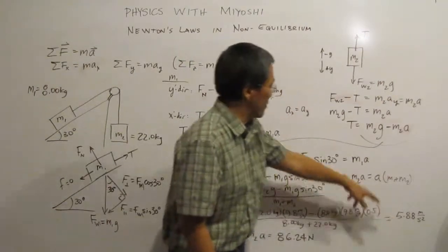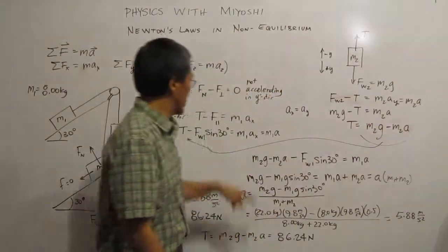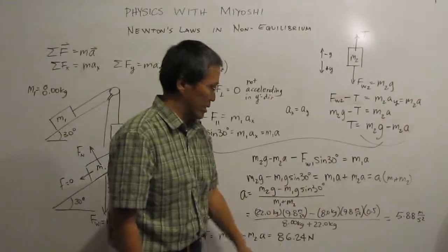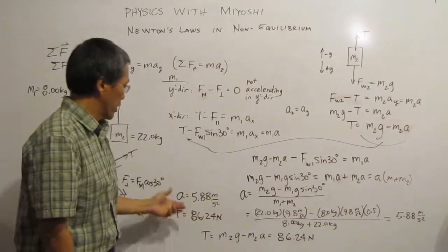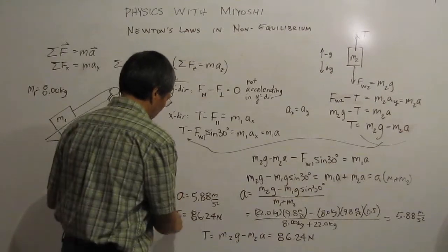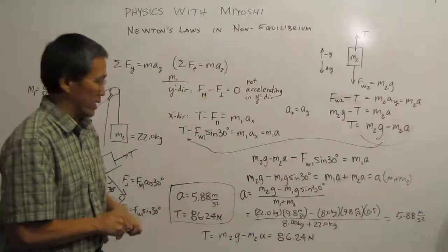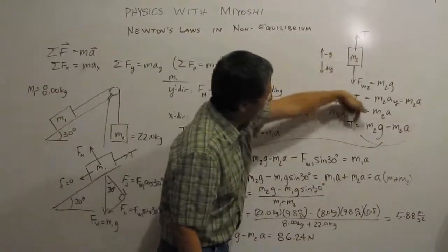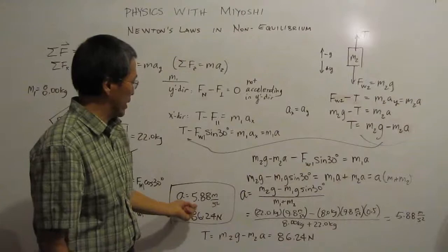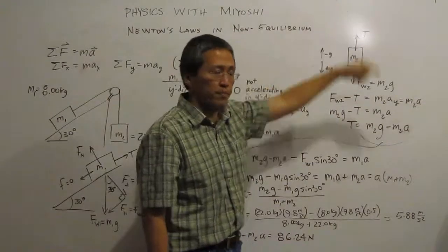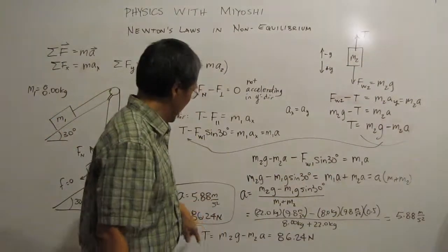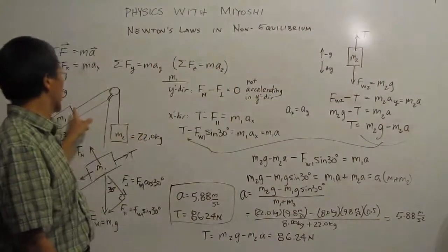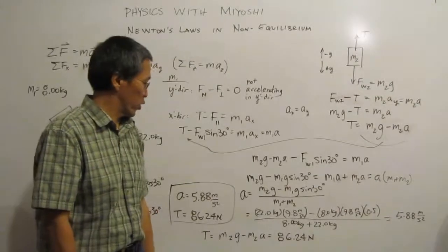Now once I do find that guy, I can plug that back into this equation or this equation, either one. And then I'll find my t and I find out that t is 86.24 newtons. So when all is said and done, I end up finding out that my acceleration is 5.88 meters per second squared. And that will be going down. If this number had ended up being negative, we would know that it was going up or to the left over here. And then my tension, the tension is both the same on that guy as it is on this guy. And that tension is 86.24 newtons.